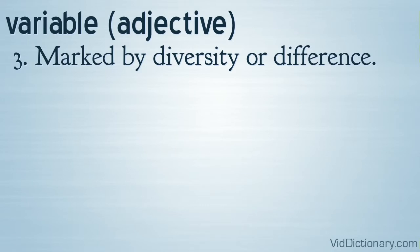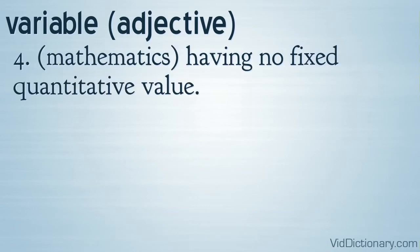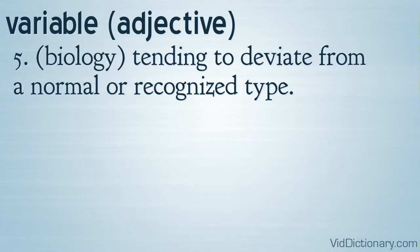Definition 3: marked by diversity or difference. Definition 4: Mathematics, having no fixed quantitative value. Definition 5: Biology, tending to deviate from a normal or recognized type.